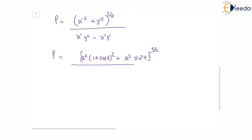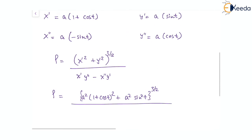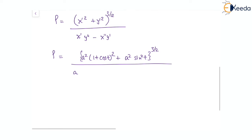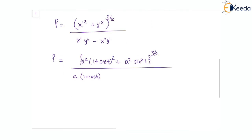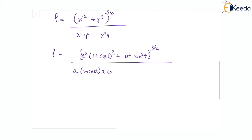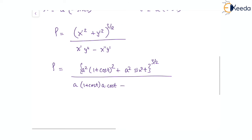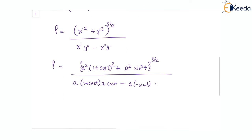In the denominator, we have x-dash that is a times of 1 plus cos t, multiplied by y-double-dash which is a times of cos t, minus x-double-dash which is a times of minus sin t, multiplied by y-dash which is a times sin t. We can see that a squared is common in both terms.